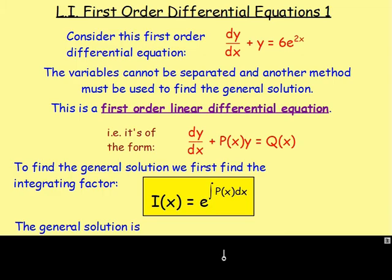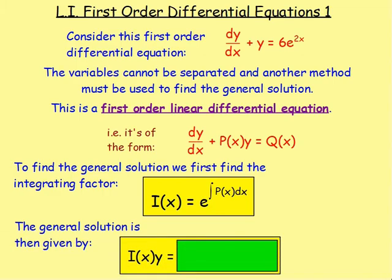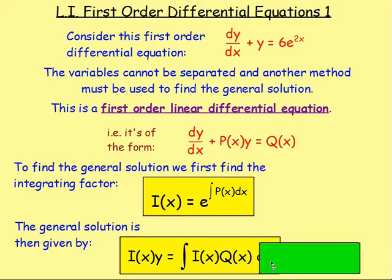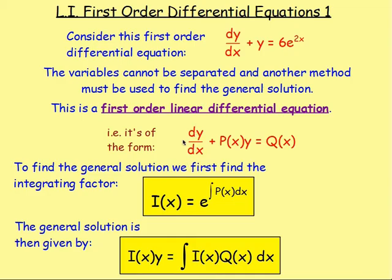What we then do to get the general solution: that's given by the integrating factor times y equals the integral of the integrating factor times Q(x), integrated with respect to x. And remember, Q(x) is whatever is on the right-hand side. However, if you get one of these questions, you need to make sure it starts off with dy/dx. If you have x dy/dx, you'd have to divide everything by x. You need just dy/dx on its own.